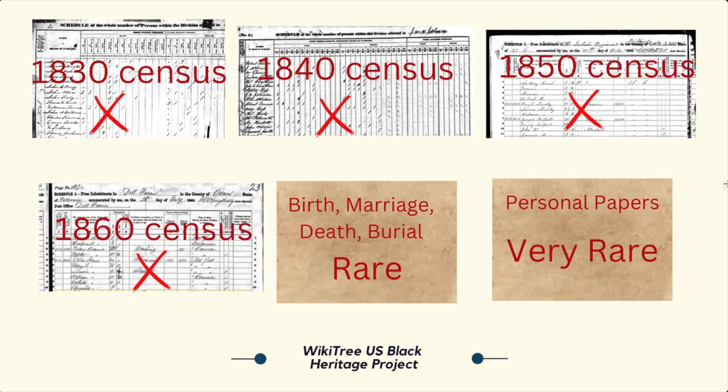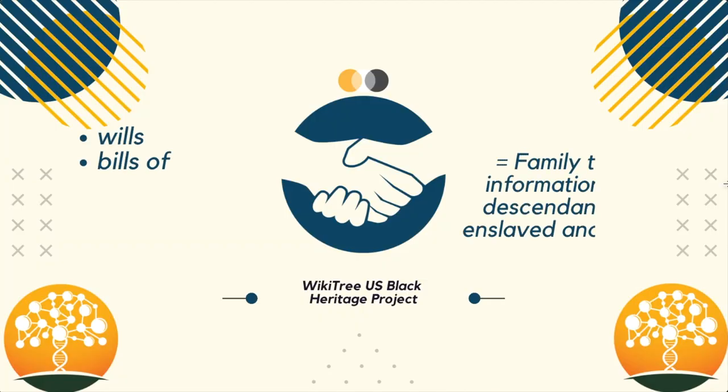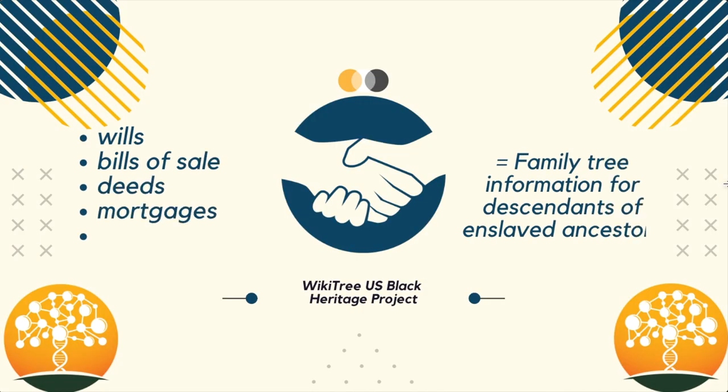Because slaves were not documented by name on any national documents until the 1870 census, we must look at documents of slave owners such as wills, bills of sale, deeds, mortgages, estate valuations, and even diaries. By using this information, we can create profiles for the enslaved ancestors and connect them to their descendants.